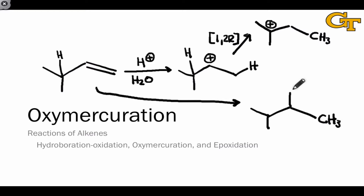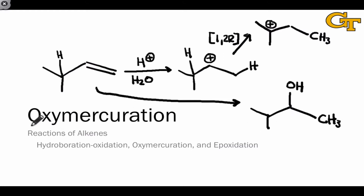In other words, what if we want the hydroxyl group at the more substituted position, but the substrate we want to start with has the possibility of rearrangements if a carbocation appears? Well, that's where oxymercuration comes in. This is a method for Markovnikov hydration — hydration with the same selectivity as acid-catalyzed hydration — that avoids rearrangements.